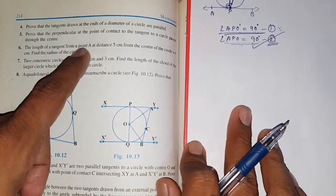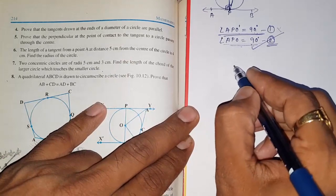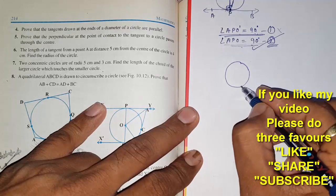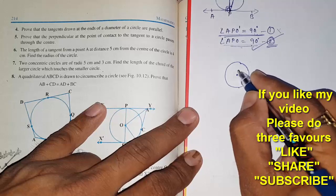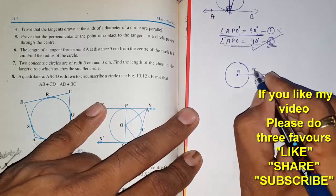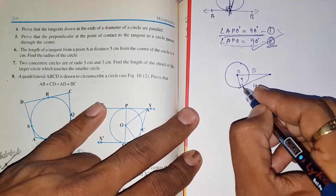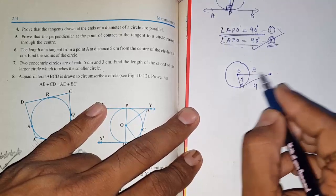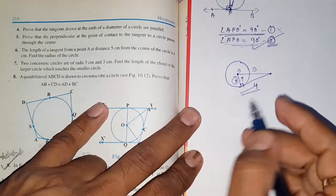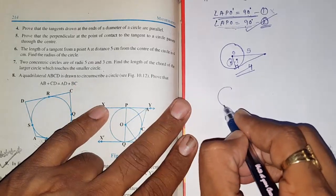Now moving to Question 6: The length of a tangent from point A at a distance of 5 cm from the center of the circle is 4 cm. Find the radius of the circle. The distance from the center is 5 cm and the tangent length is 4 cm. Since the tangent is perpendicular, we can find the radius by Pythagoras. The Pythagorean triple is 5, 4, and 3, so the radius will be 3 cm.